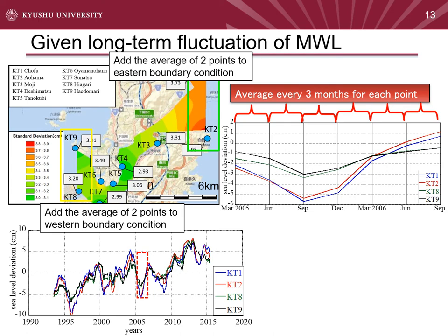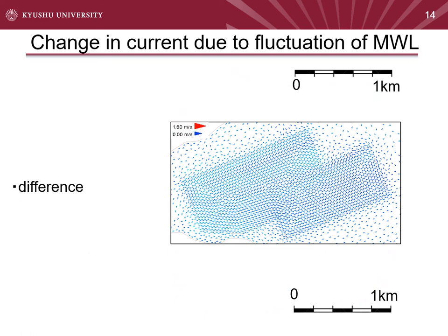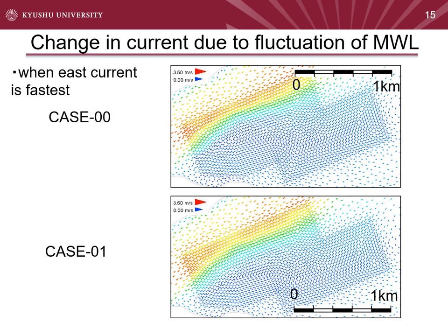This is a distribution of bottom current velocity at the Tanora area when the west current is fastest. The results are almost the same in both cases. However, when the east current is fastest, there is a difference at the location where sand waves are developed.